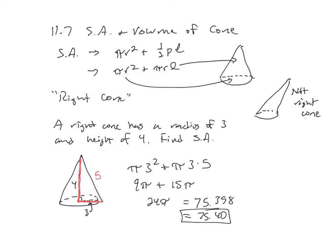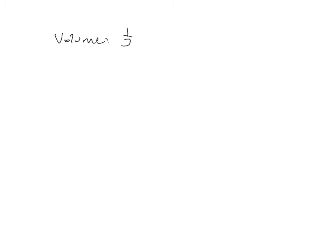The volume formula is the same as for a pyramid, which we did last week: one-third times the area of the base times the height. Since the base of a cone is a circle, the formula is V = (1/3)πr²h. One important difference: for volume you want the height straight down through the center of the cone, not the slant height up the side.